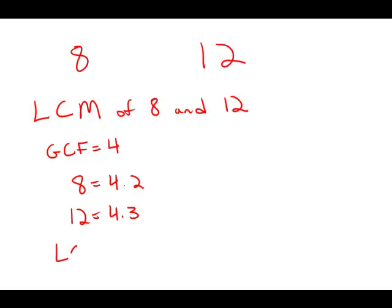The least common multiple is going to be the greatest common factor times the extra leftover pieces from those other two. So that's 4 times 2 times 3. That's 24. That is the least common multiple, and that is the lowest possible number of students. Answer choice B.